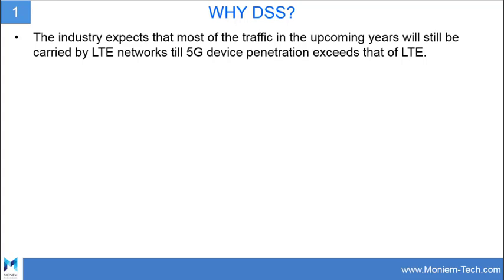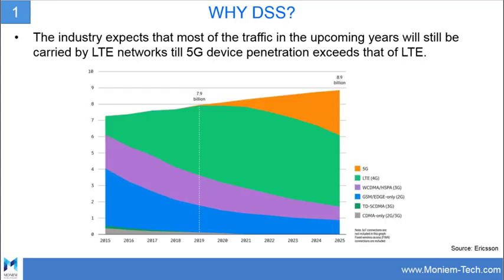The first reason is that the industry expects most of the traffic in upcoming years will still be carried by the 4G network, until 5G device penetration exceeds that of LTE. As per the Ericsson Mobility Report for 2020, there is still a gap between 4G and 5G traffic. By 2025, 8.9 billion total connections will be exceeded, with most still from 4G, and the remainder split between 5G and a small share of 2G and 3G.